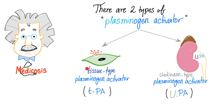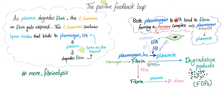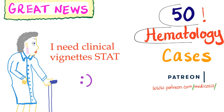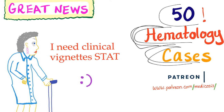There are two types of plasminogen activators: the tissue-type plasminogen activator (TPA) and the urokinase-type plasminogen activator (UPA). TPA is found in the endothelium — specifically the injured endothelium — and UPA was first discovered in human urine. Plasminogen and TPA get incorporated into fibrin forming a ternary complex, which helps activate plasminogen into plasmin.